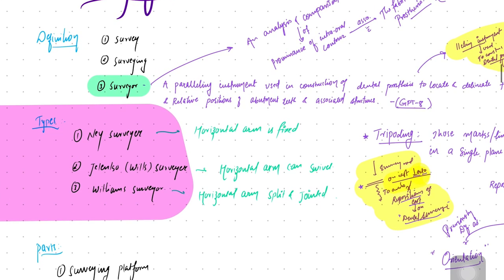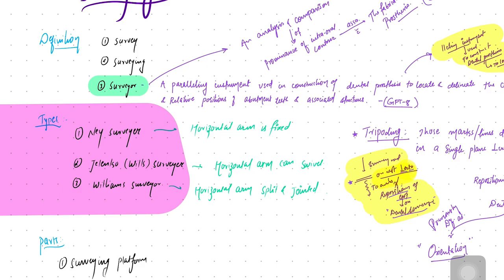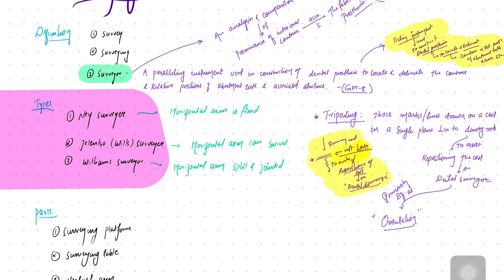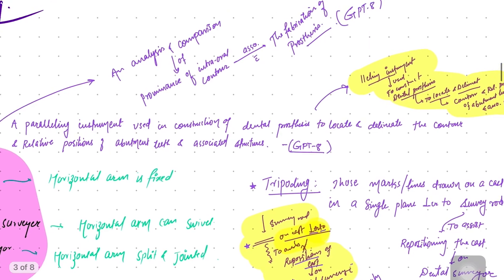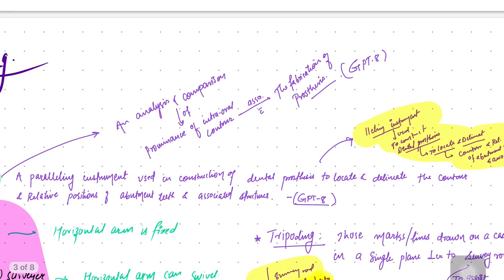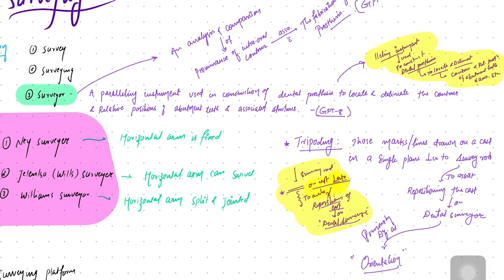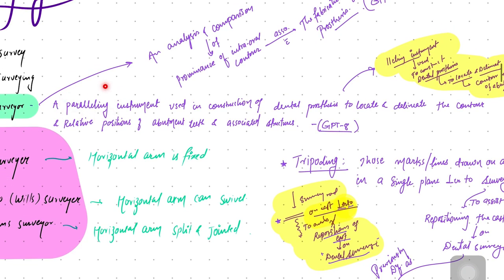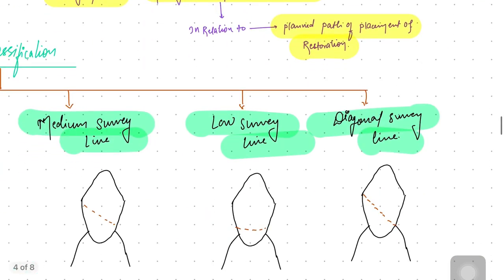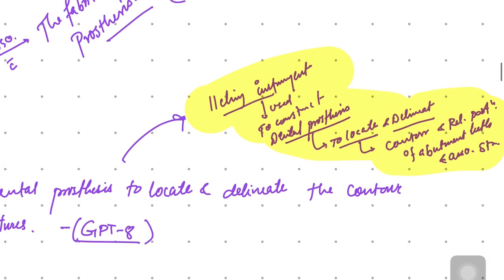Let's start with the topic of the surveyor. The surveyor is an important question. As per GPT-8 (Glossary of Prosthodontic Terms), the surveyor is defined as a paralleling instrument used to construct dental prostheses — to locate and delimit the contour and relative position of the abutment teeth and associated structures. A shortcut to remember: it is a paralleling instrument used to construct a dental prosthesis.